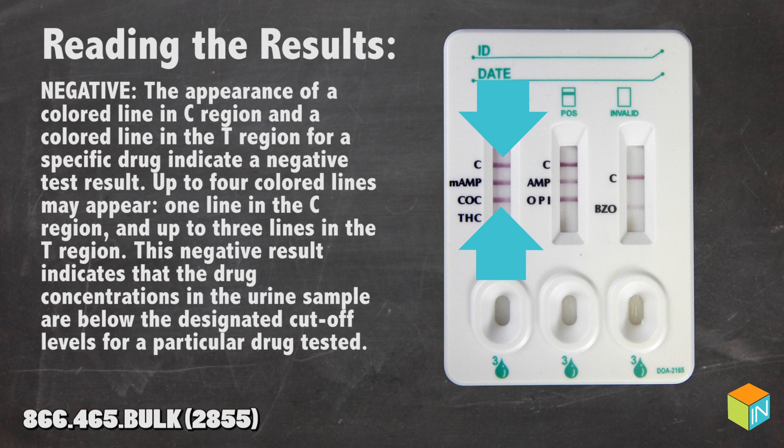Up to 4 colored lines may appear: one line in the C region and up to 3 lines in the T region. The negative result indicates the drug concentrations in the urine samples are below the designated cutoff levels of a particular drug tested.